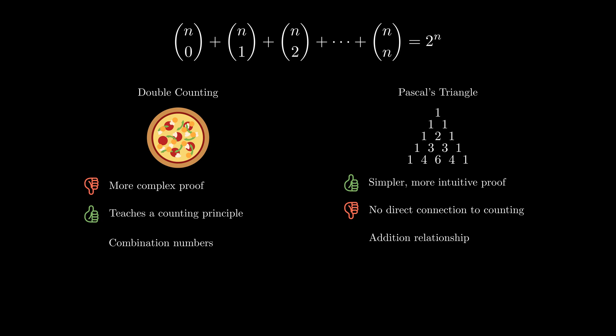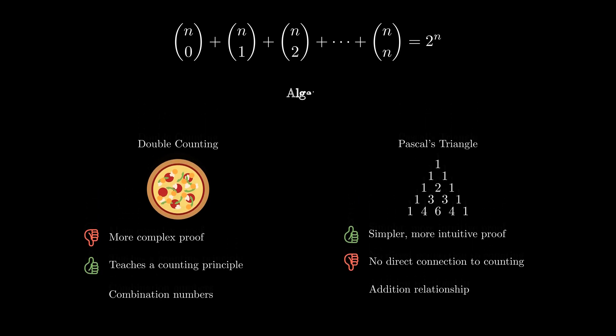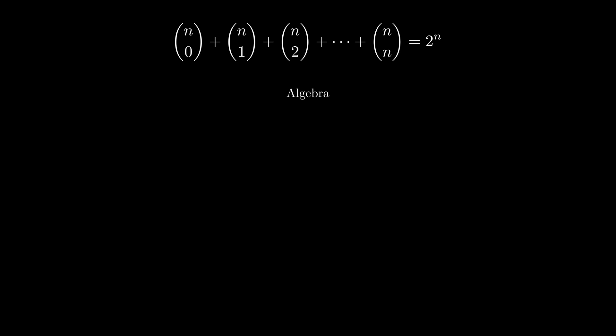Finally, there is a third way to prove combinatorial identities, and that just simply involves algebra. Remember that our combination numbers also had a formula involving factorials. By simply plugging the values into the formula and simplifying, we might be able to obtain a proof that way too. But, if you actually try this method on this particular identity, you might find it is nearly impossible. This mostly has to do with a dot dot dot in the expression, which means you're adding a variable number of terms, making it very difficult to simplify and combine.